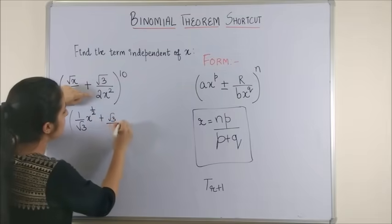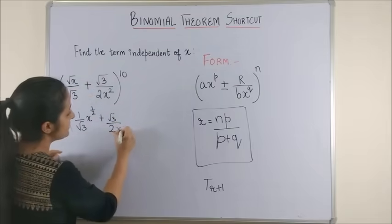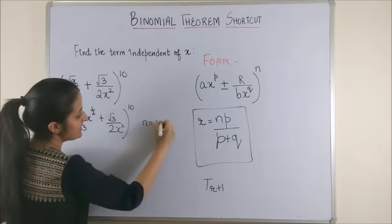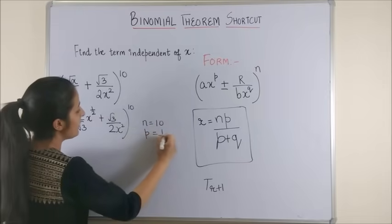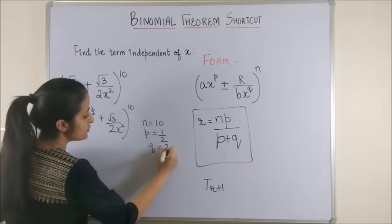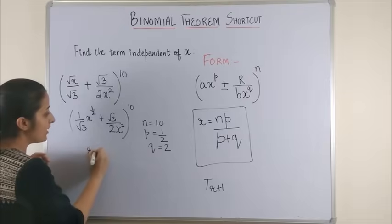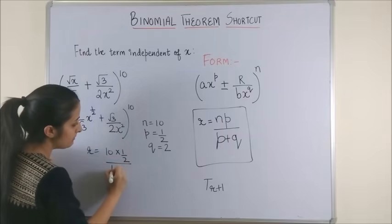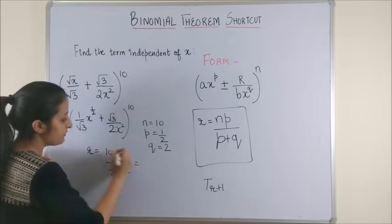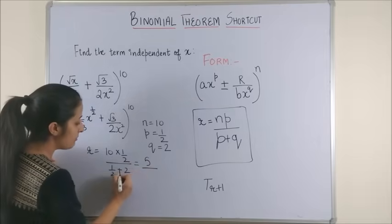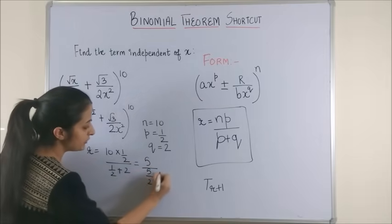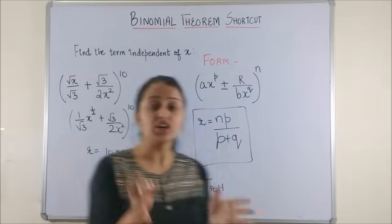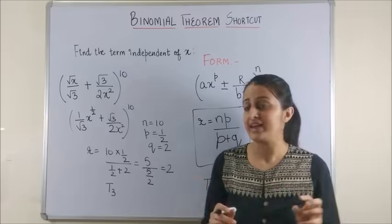This root x, just remember, means x raised to power half. This root 3 by 2 is something again you are not interested in. And this was anyway x square. So now from here if you see your n is 10, your p is half and your q is 2. So your r becomes n into p upon p plus q which means 5 upon, this gives us 5 by 2. So the answer is 2. That means, it is the third term which is independent of x.